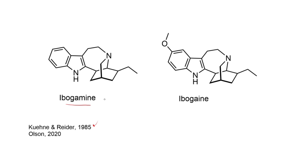Ibogamine is still of interest today; it's being studied as a potential treatment for addiction, and it's known that this molecule has anti-addictive properties. The thing that's really holding it back is the hallucinogenic potential and also the associated toxicity — in particular, cardiotoxicity associated with this molecule. David Olson and co-workers have actually been working on making analogues of ibogamine that retain the anti-addictive properties but have a simpler chemical structure and don't have the associated toxicity.